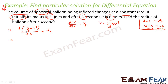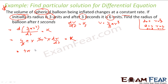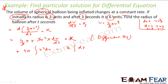Separating variables: 4π r² dr = k dt. Integrating both sides, 4π · r³/3 = kt + c. So we have an equation with radius in terms of t. We have two unknowns k and c, so we need to apply the two initial conditions to find them.